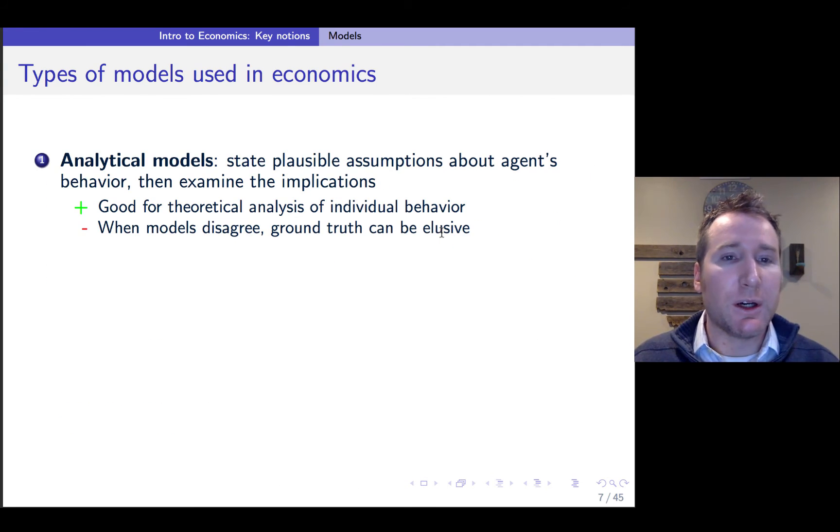So several different types of models are used in economics. You have an analytical model where you think about what you would expect an agent would be, that a consumer or a firm, what their beliefs are, and then you examine the implications. So this is really good for coming up with a theoretical analysis of how a scenario might operate. But you can often end up with models that disagree about the conclusions. And when that happens, it can be hard to get ground truth because you're relying on slightly different assumptions, all of which deviate from reality.